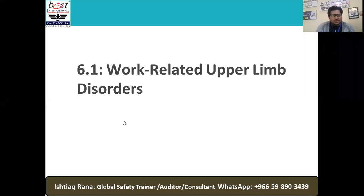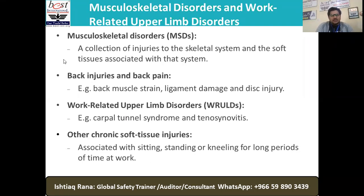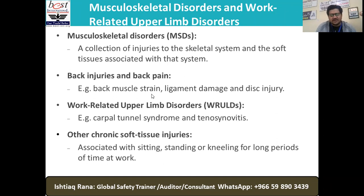We can start with 6.1, which is all about work-related upper limb disorders. What types we can link with that particular category is MSD — musculoskeletal disorders — a collection of injuries to our skeletal system, including soft tissues, and several back injuries and back pain issues because of muscle strain, ligament damage, or disc injury.